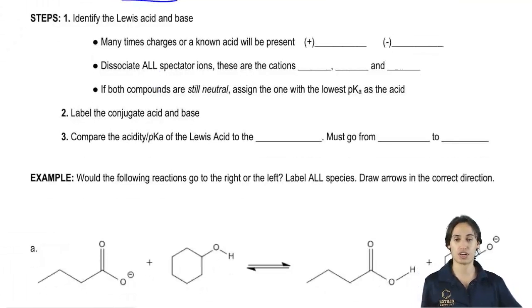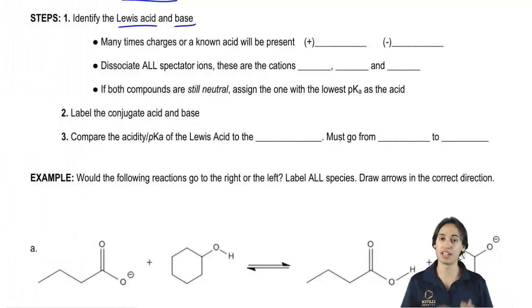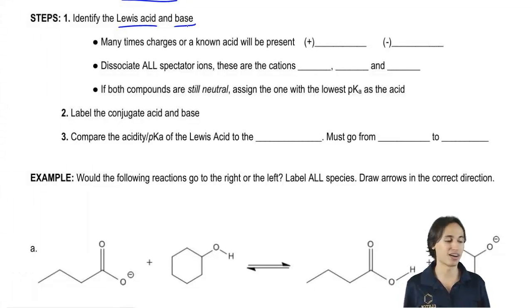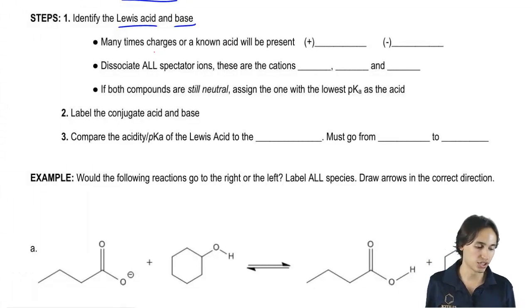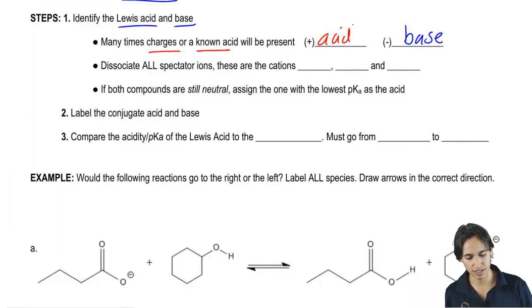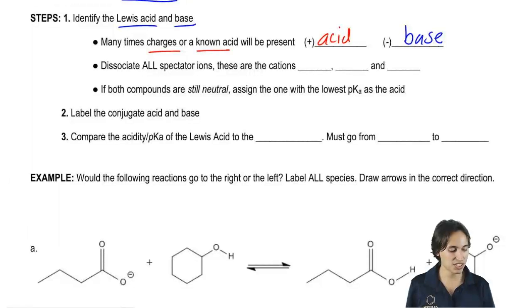The very first thing that you always want to start off with is identifying the Lewis acid and the Lewis base. Remember that I said Lewis is the most general definition of acids and bases. So that just means that you're just going to find on the left-hand side which one is the acid and which one is the base. Many times there's going to be known charges or a known acid will be present. So if there's charges or a known acid, that makes it easy. For example, if you see a positive charge, that's always going to be the acid. And if you see a negative charge, that's always going to be the base. Or also let's say that you have a carboxylic acid, then that would make it easier as well or if you have HCl or whatever.